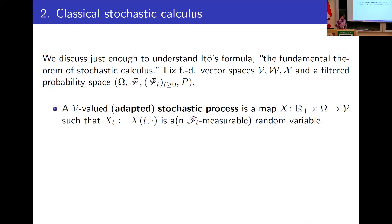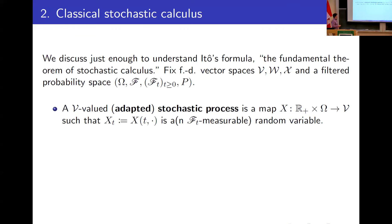A stochastic process is a collection of random variables indexed by the positive real line. It's a map from R_+ cross Ω to, for example, V, such that at each time t, the variable X_t is measurable. If you say the word adapted, what you mean is that at each time, this random variable is measurable with respect to F_t. So that's an adapted stochastic process with values in V.